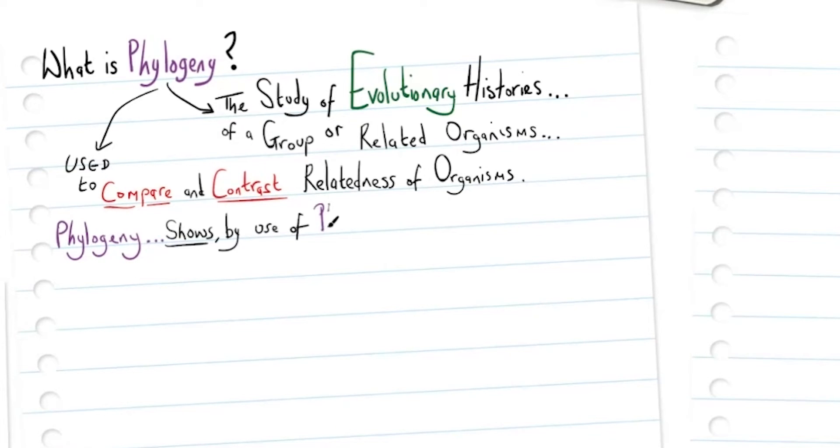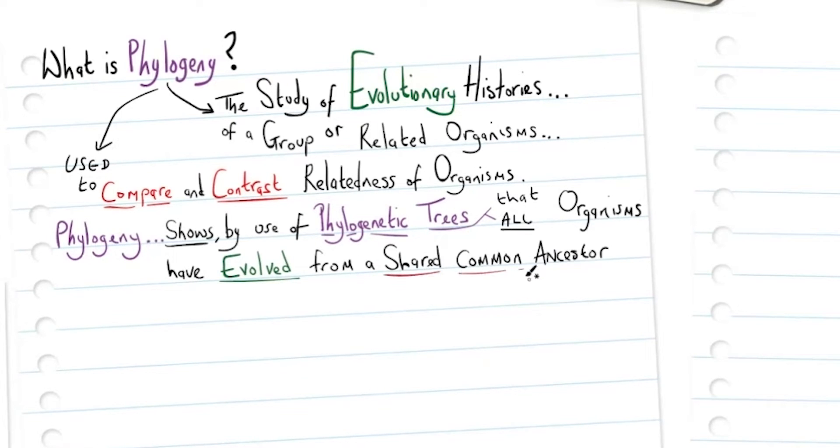Phylogeny shows us by use of phylogenetic trees that all organisms have evolved from a shared common ancestor.